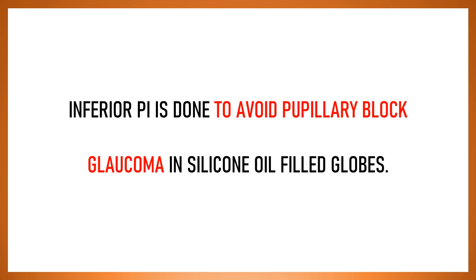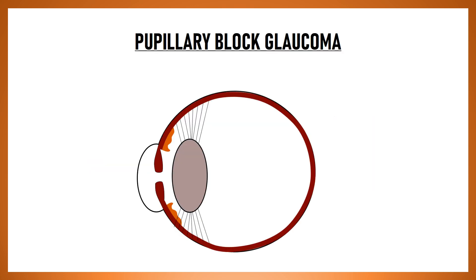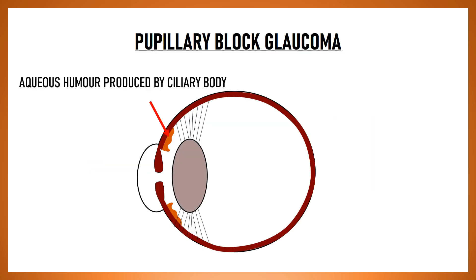So what is pupillary block glaucoma and why are silicon oil filled eyes susceptible to developing a pupillary block? We know that aqueous humor is produced by the ciliary body which is located in the posterior chamber of the eye.